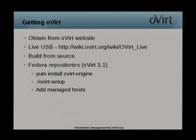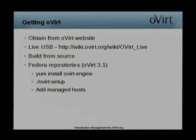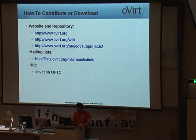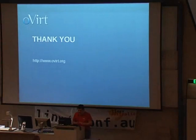Getting oVirt: you can obtain it from the oVirt website. There are two methods — official packages, and a live USB which is probably the easiest method to get oVirt Engine. You just plug in the USB, boot from it, and you've got oVirt Engine ready to start attaching nodes. You can also build from source. The Fedora repositories are currently at oVirt 3.1, with the current release either just released or releasing in the next couple of weeks.